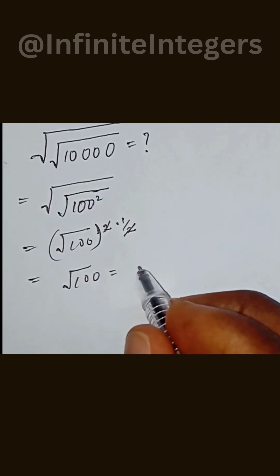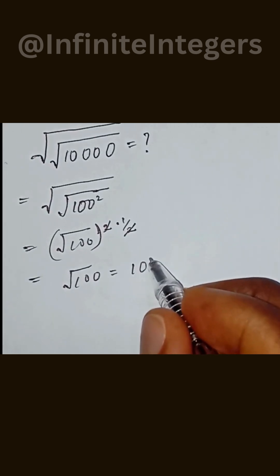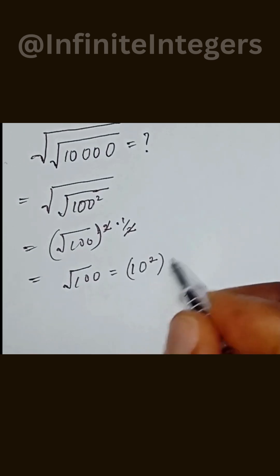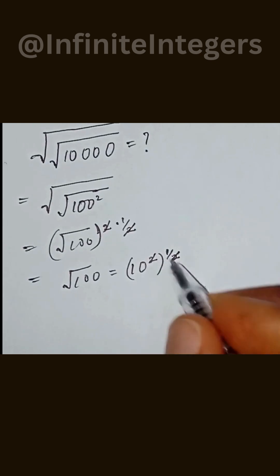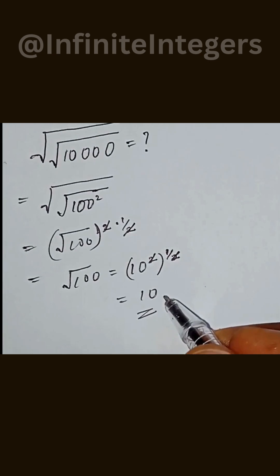And square root of 100 can also be written as 10 to the power of 2, to the power of half. So this can cancel out with this. Then we are left with 10. This is our final answer.